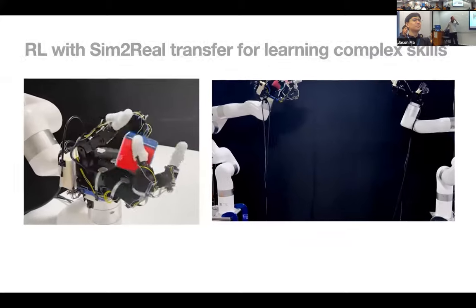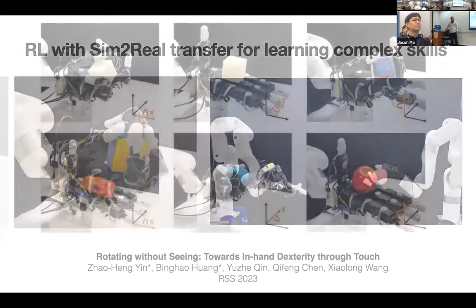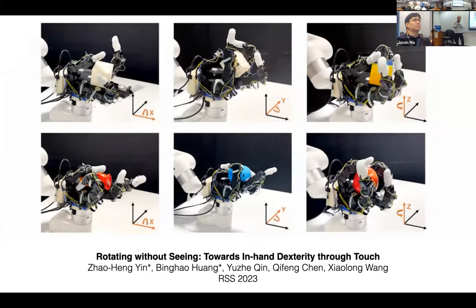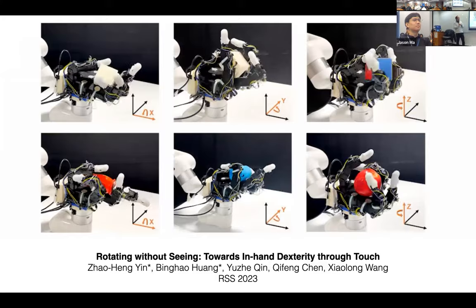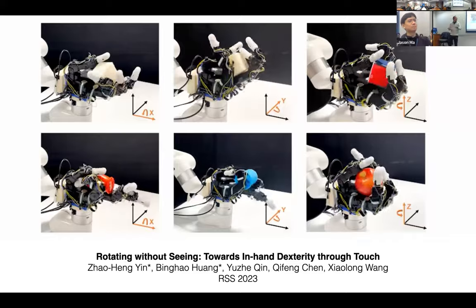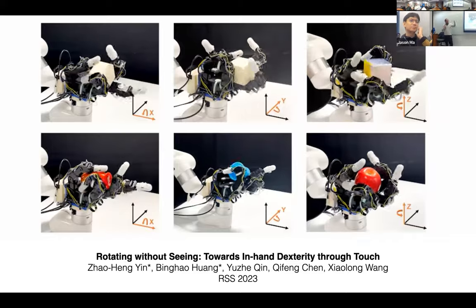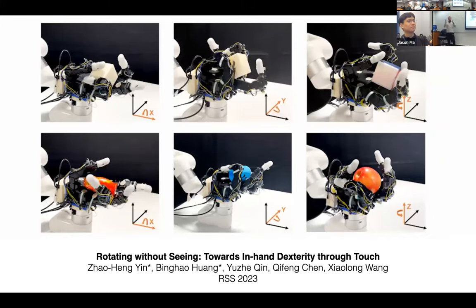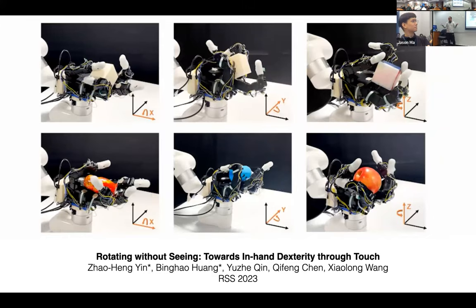I'm going to first talk about some of our manipulation work, specifically on nerve manipulation. It's actually a strange thing for me because the title is 'Rotating Without Seeing' — from the vision-guided perspective, I'm working on a project that does not require vision. You just imagine you have an object in your hand and you try to manipulate and rotate it by just feeling the object, not seeing it at all. That's essentially what we try to enable the robot to do.